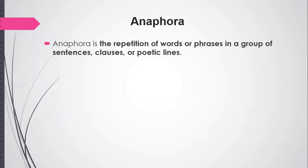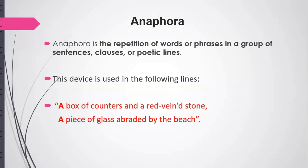Anaphora: what is meant by anaphora? It is the repetition of words or phrases in a group of sentences, clauses, or poetic lines, and especially these are used at the beginning of the lines. This device is also used in the following lines of the poem: 'A box of counters and a red vein stone, a piece of glass abraded by the beach.' The word 'a' is the example of anaphora — the repetition of a word or phrase at the beginning of the lines.